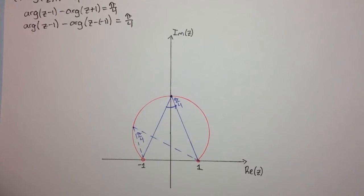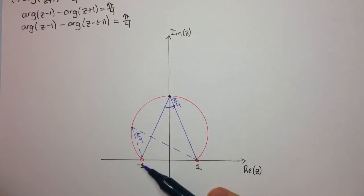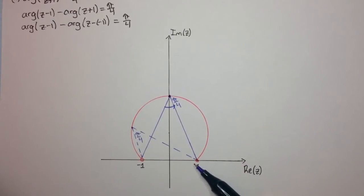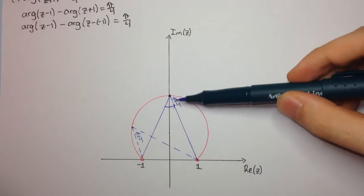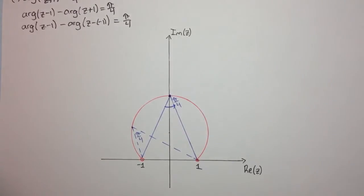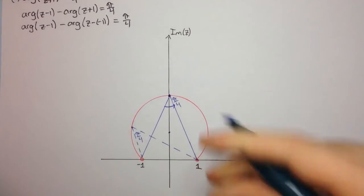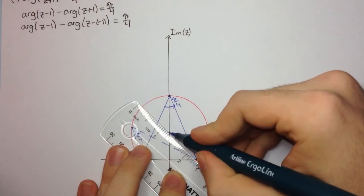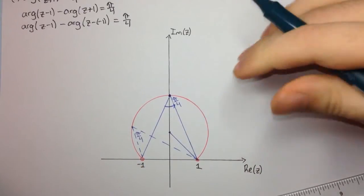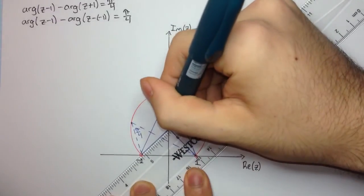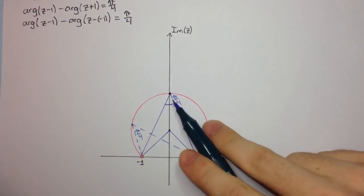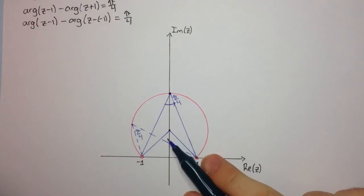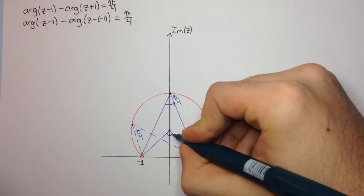One of the first circle geometry properties you learn is that the angle at the center subtended by an arc or chord is equal to twice the angle at the circumference. Since this is the angle at the circumference, the angle at the center should be twice this value. So if this is our center here, we consider this triangle. This angle is twice pi on 4, which is pi on 4 or 45 degrees — twice that is 90 degrees. So here we have a right-angled triangle.